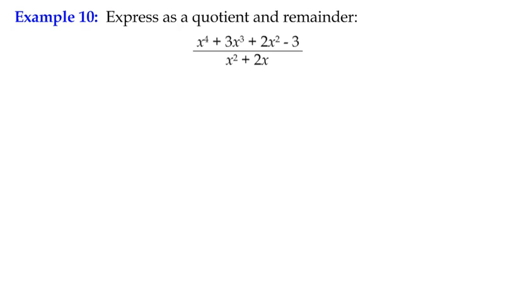Example 10, express as a quotient and remainder. We have our improper rational function here. This is the second example.